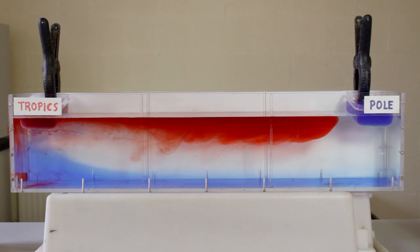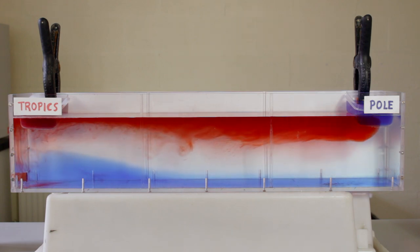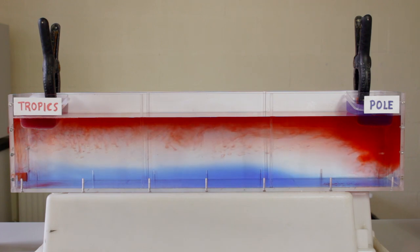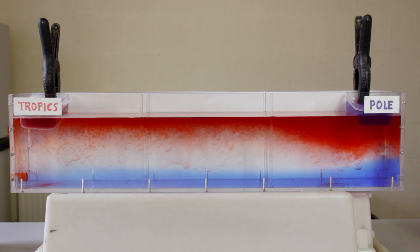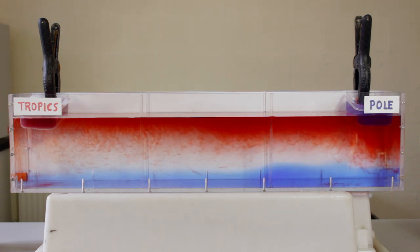But after a while, the circulation stops. If this were to happen in the oceans, they would be left stagnant and unmoving. But studies of deep ocean cores tell us this is not the case, and that something else is maintaining the overturning circulation. What could it be?